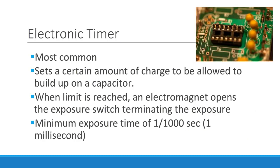The electronic timer is the most common timer utilized today. It sets a certain amount of charge to be allowed to be built up in a capacitor — any device that stores an electrical charge. When this electric charge limit is reached, the capacitor discharges its current, which causes an electromagnet to open the exposure switch, terminating the exposure. These timers are very accurate and can produce exposure times of 1 ms.